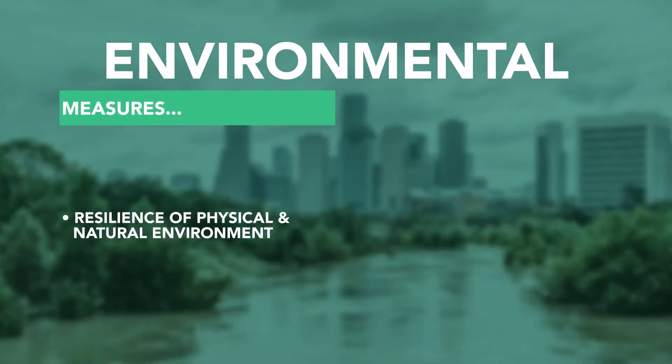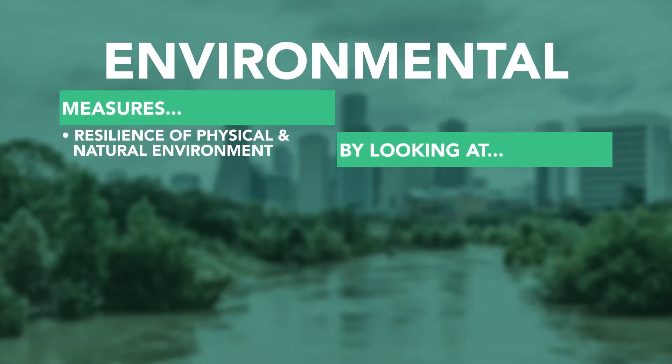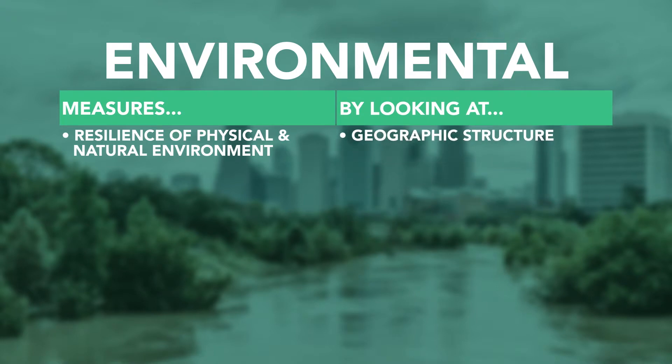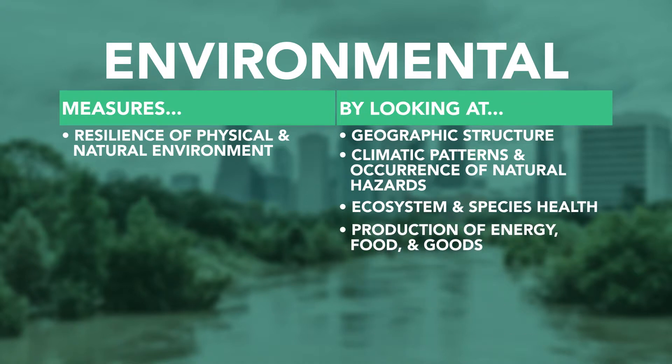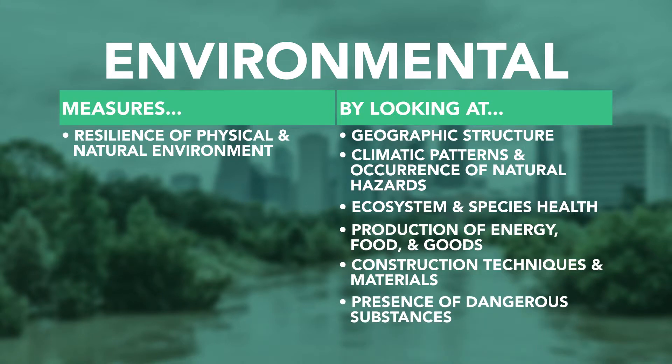Environmental vulnerability measures the resilience of the physical and natural environment. The geographic structure of the area as well as climatic patterns and the occurrence of severe weather, earthquakes, and flooding are typically considered in the assessment. Additional measures may include ecosystem and species health, the production of energy, food, and goods, construction techniques and materials, and the presence of dangerous substances such as mercury, lead, pollution, and chemicals. The resilience of a community is strengthened through policies that enhance the nearby natural environment and promote design strategies to protect the well-being and vitality of residents.